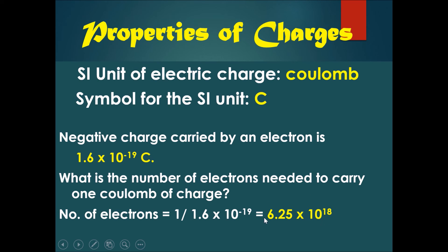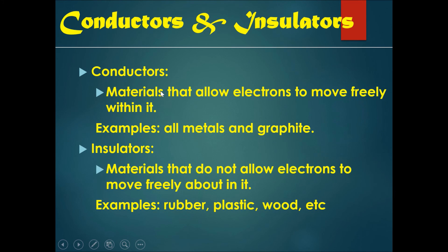This number of electrons is required to carry one coulomb of charge. Now let's recap. Conductors are materials that allow electrons to move freely within it. Some examples are all metals and graphite.